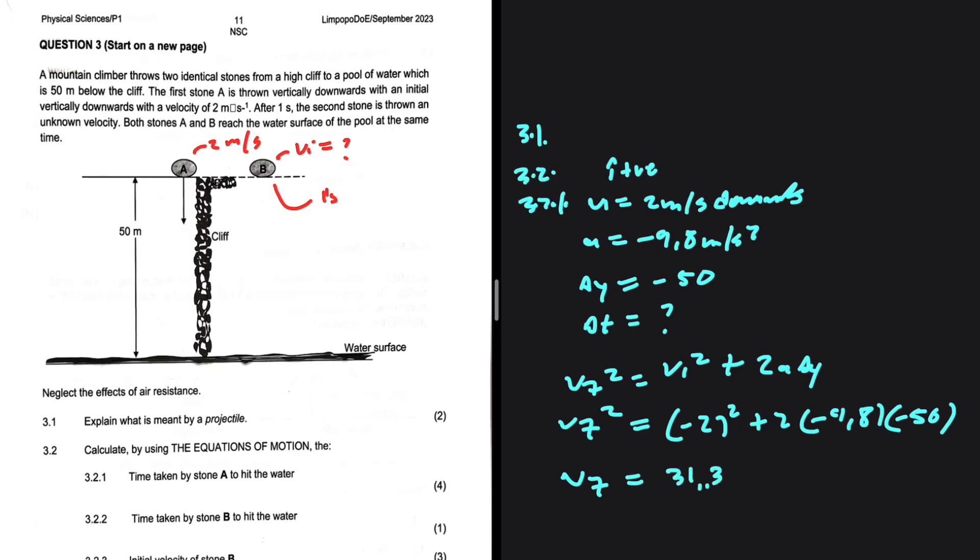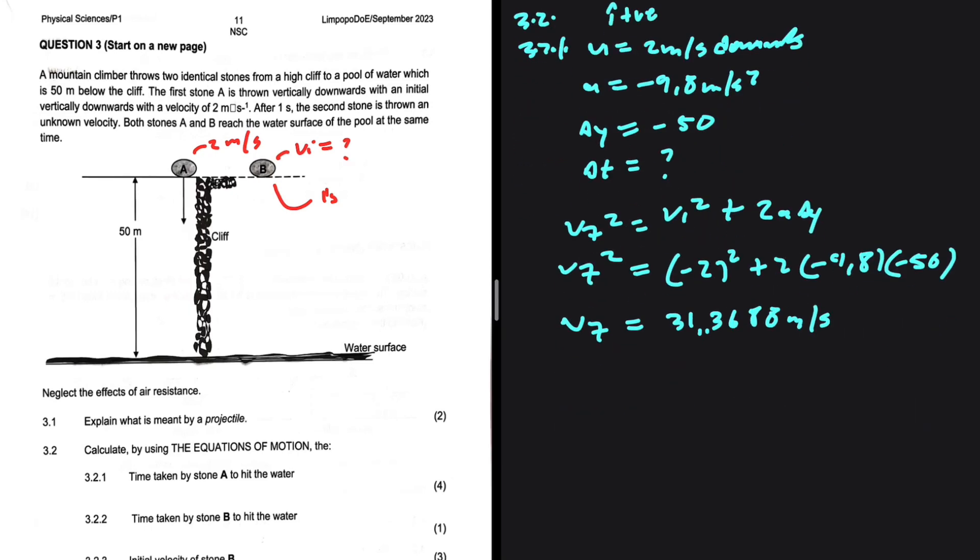I just need to take the square root on both sides. I'm going to get vf = 31.3688 meters per second, but I know that it is downwards because the ball is striking the ground while it is going downwards. When I use it next, I'm going to put a negative sign. You need to be aware of that.